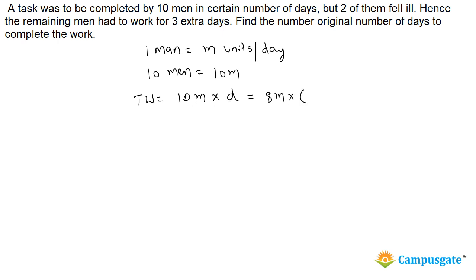Because the number of men got reduced, the days must increase. It is given that they took three days extra to complete the job. So this is the equation we have got, which is equal to 10d. Therefore 10d equals 8d plus 24.